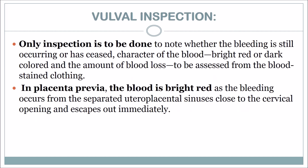On vulval inspection — only inspection is to be done — one should note whether bleeding is still occurring or has ceased, the character of the blood (bright red or dark colored), and the amount of blood loss assessed from blood-stained clothing. In placenta previa the blood is bright red, as bleeding occurs from the separated utero-placental sinuses close to the cervical opening and escapes out immediately.